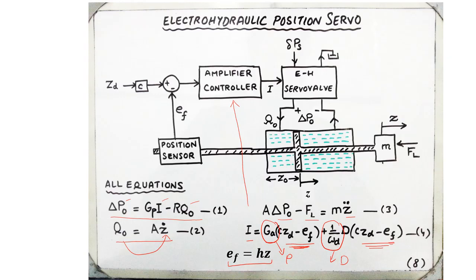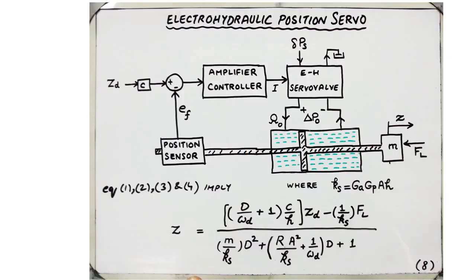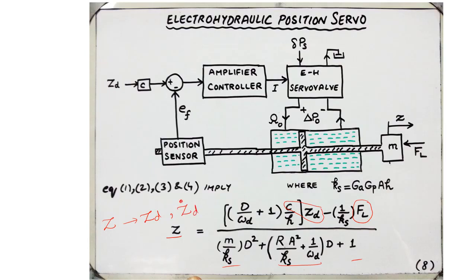Combining all five equations, we arrive at a second-order differential equation relating Z — the output displacement — with the desired input displacement ZD and the disturbance force FL. In this second-order system, you can write expressions for the damping ratio and natural frequency by algebraic manipulation. One important thing to note is that this differential equation relates Z with ZD as well as Z-dot-D — the derivative of ZD — because of the derivative term in the amplifier controller.